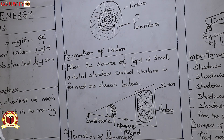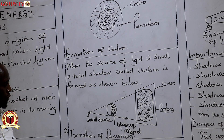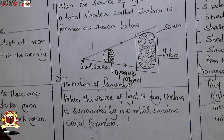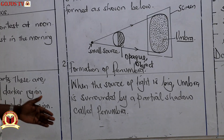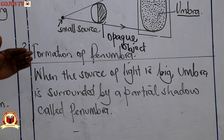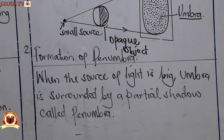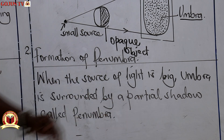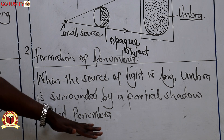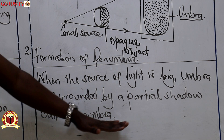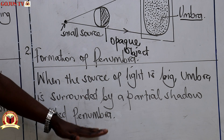Now, the formation of penumbra, which is the partial shadow or the dark region of the shadow. When a source of light is big, or when a point source of light is big, the umbra — which is the total shadow — will be surrounded by a partial shadow called penumbra. Umbra is the darker region and penumbra is the dark region of the shadow.